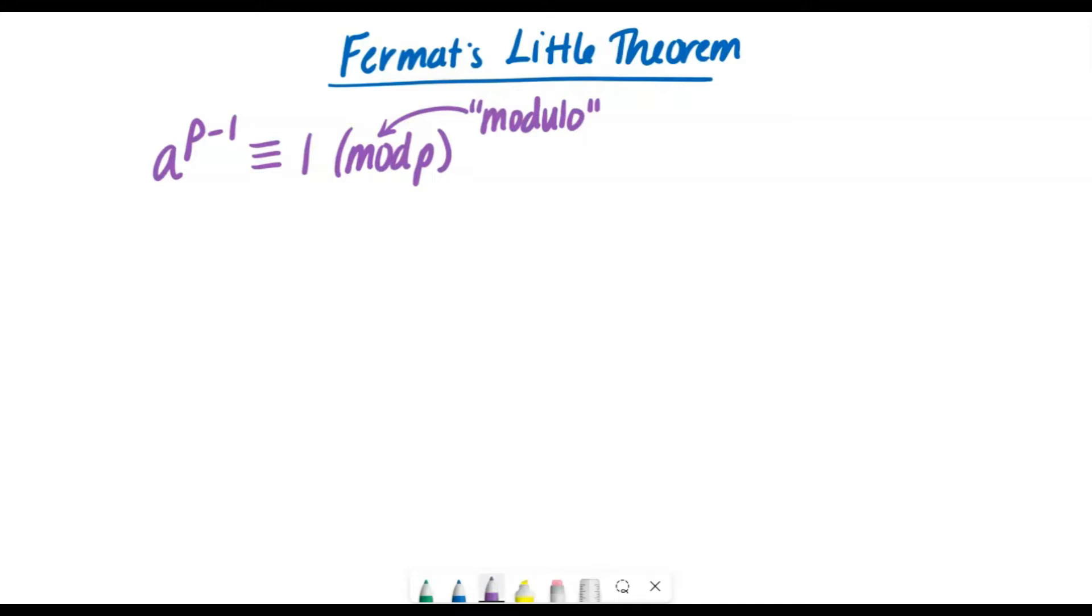Now to use Fermat's Little Theorem, p has to be a prime number. Furthermore, the greatest common divisor between a and p must be one, meaning that a and p have no common factors other than one.